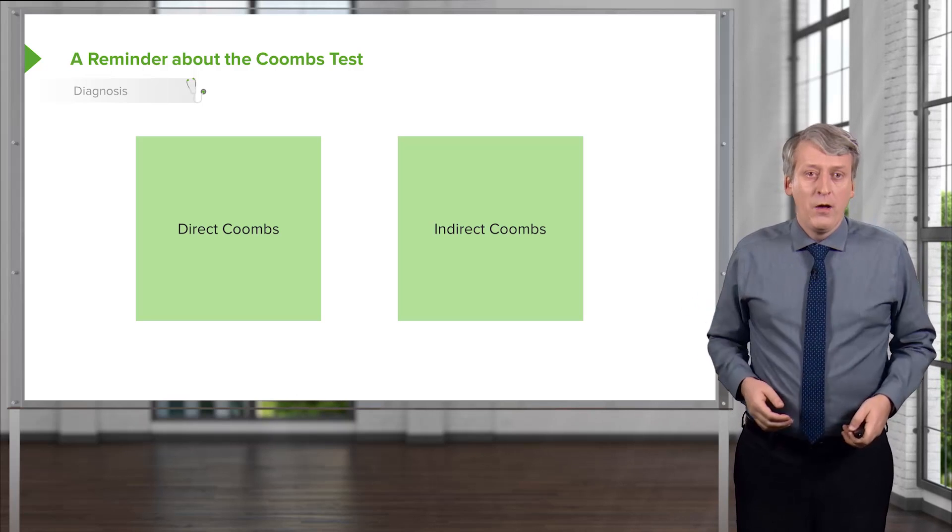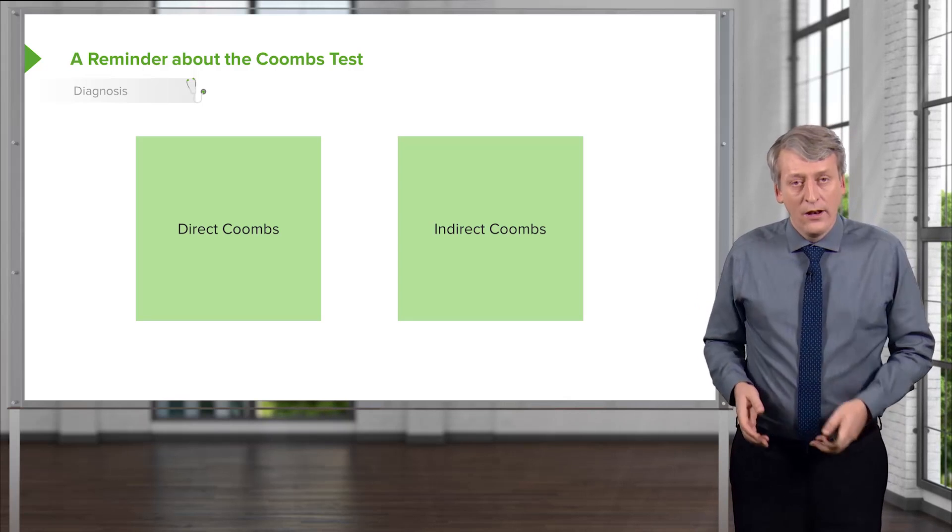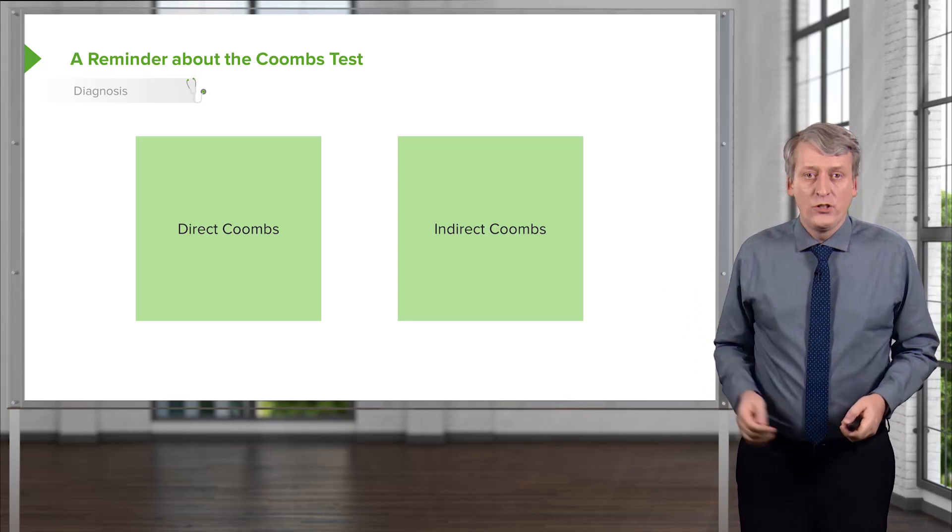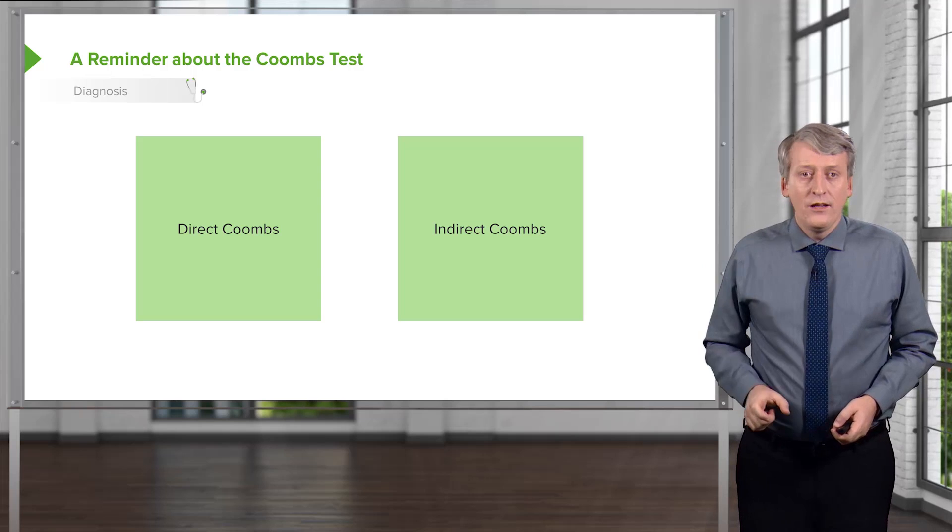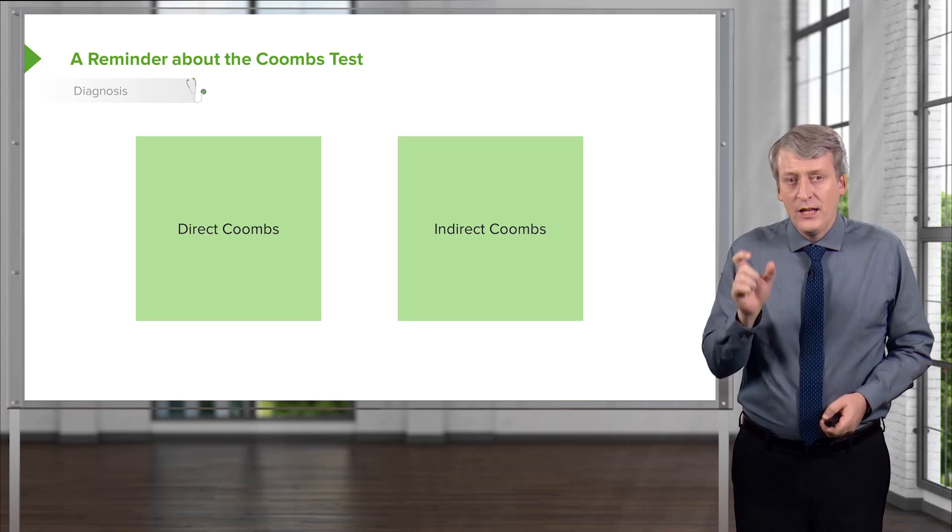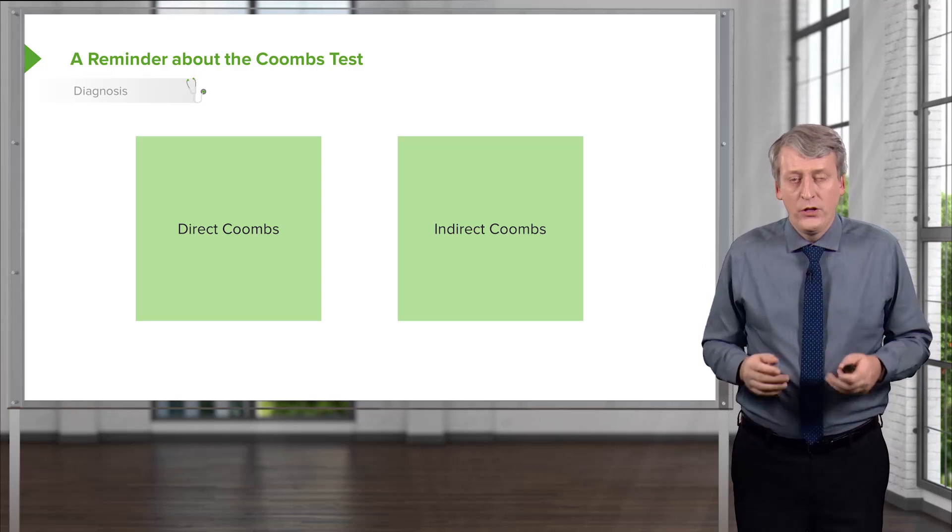If there are antibodies is the direct Coombs, and what those antibodies are attacking is the indirect Coombs. These are confusing and I want to go through these tests individually because it often shows up on your exam.